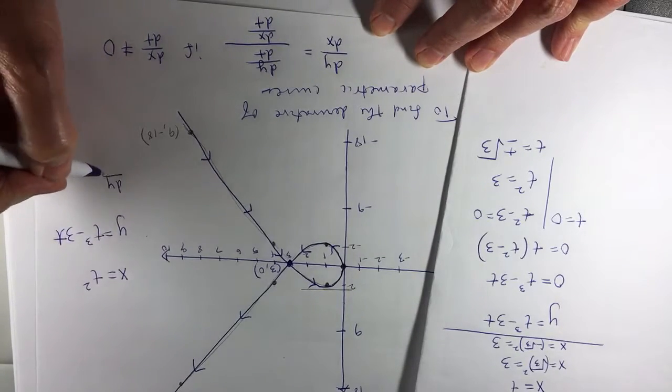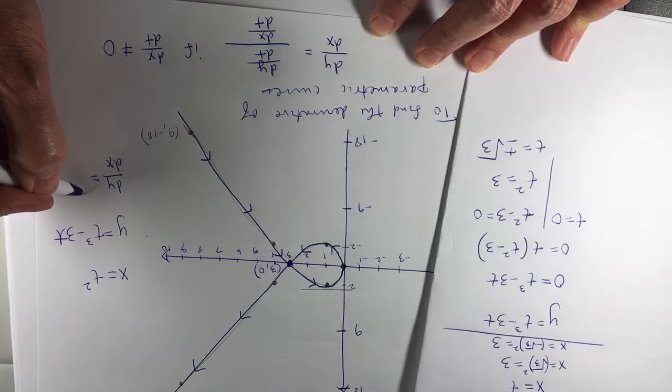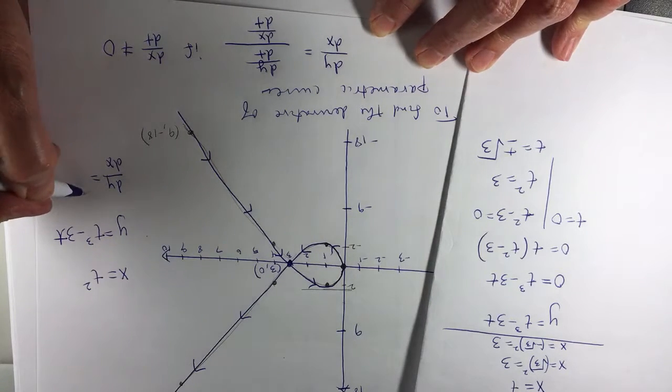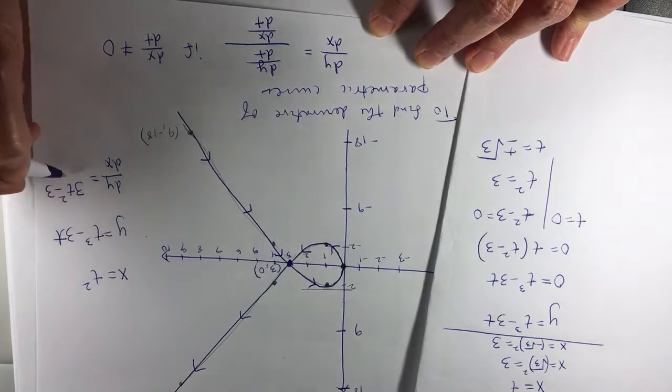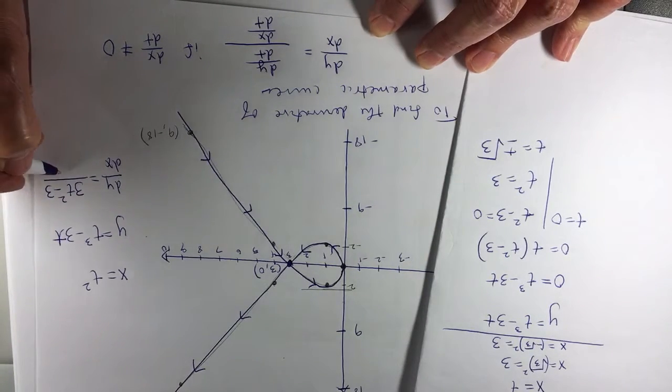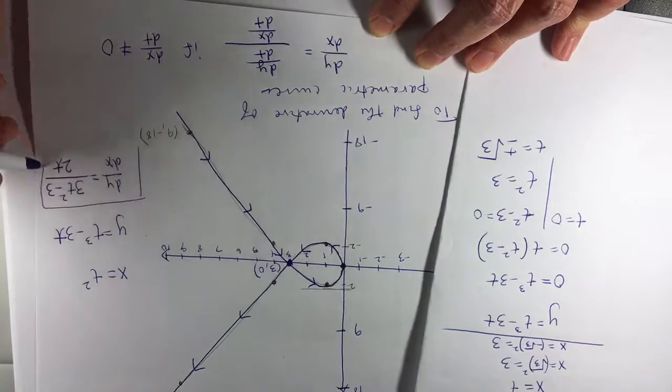So dy over dx is going to be the derivative of y with respect to t, 3t squared minus 3. And what's the derivative of x with respect to t? 2t. There's the derivative.